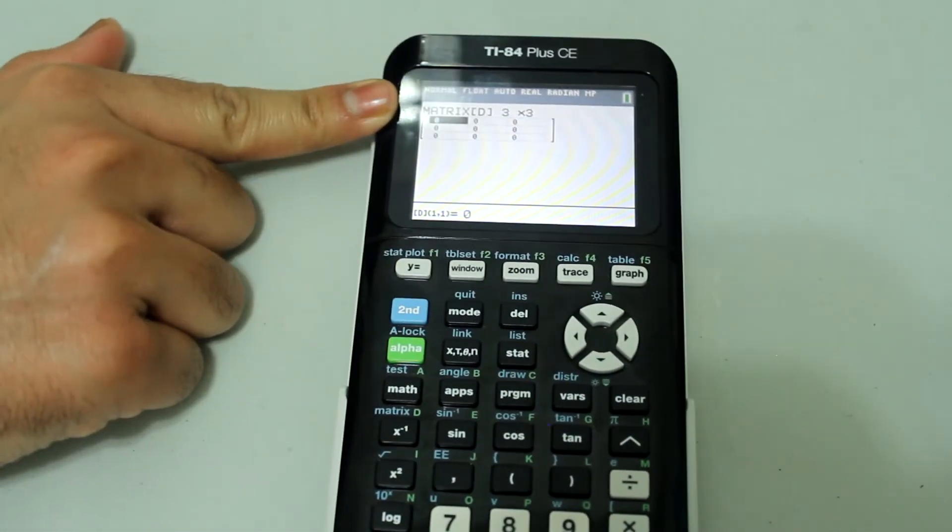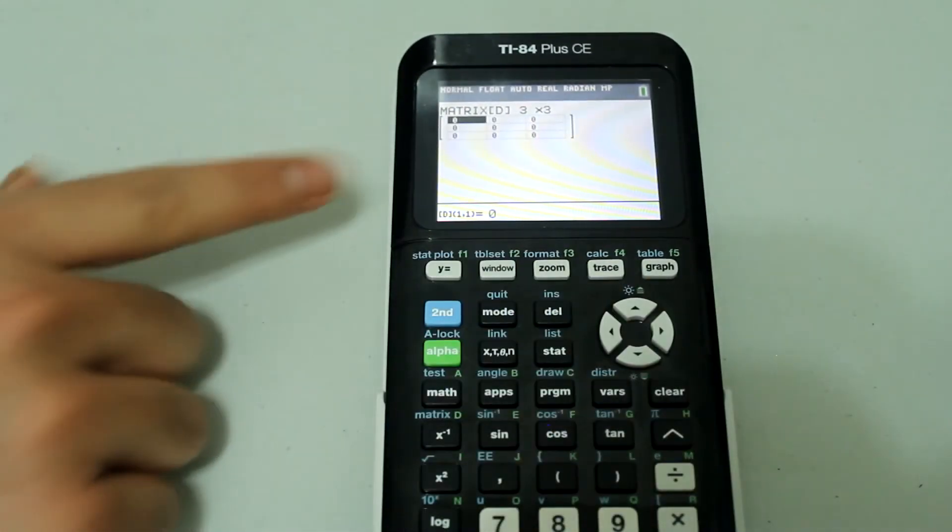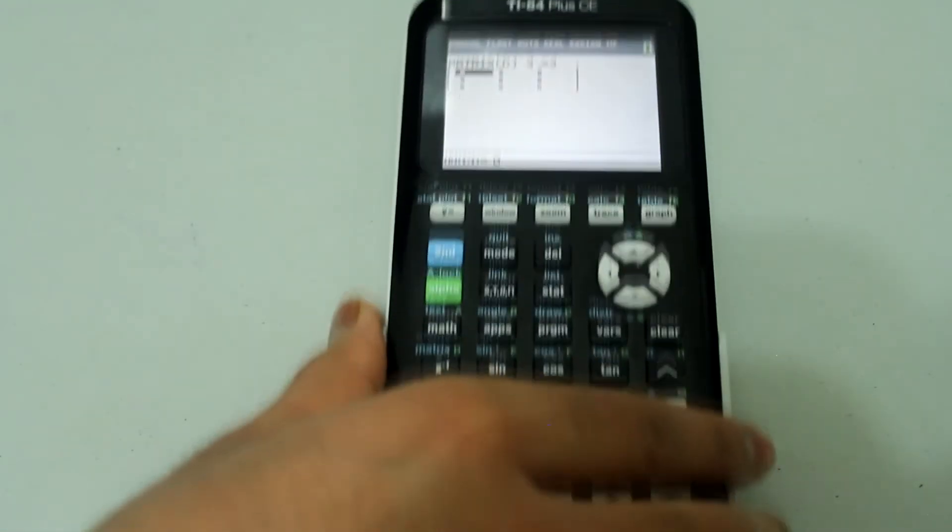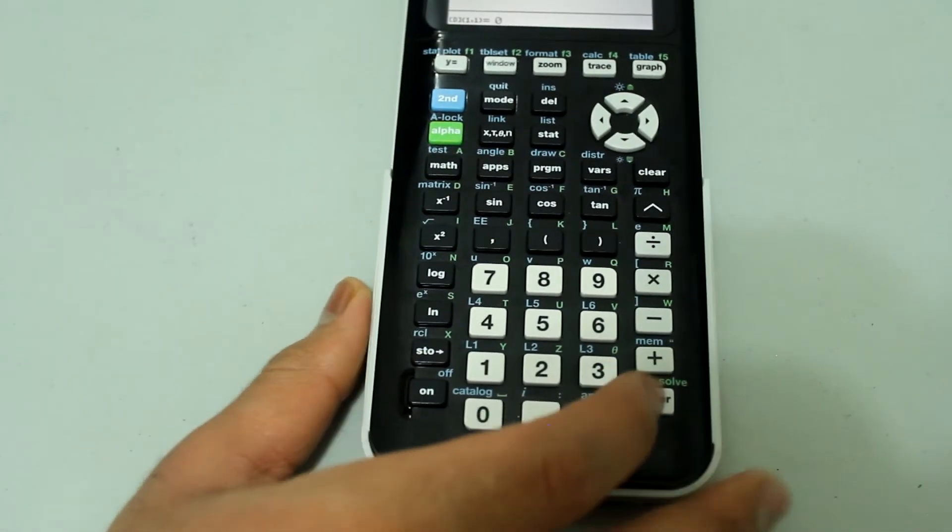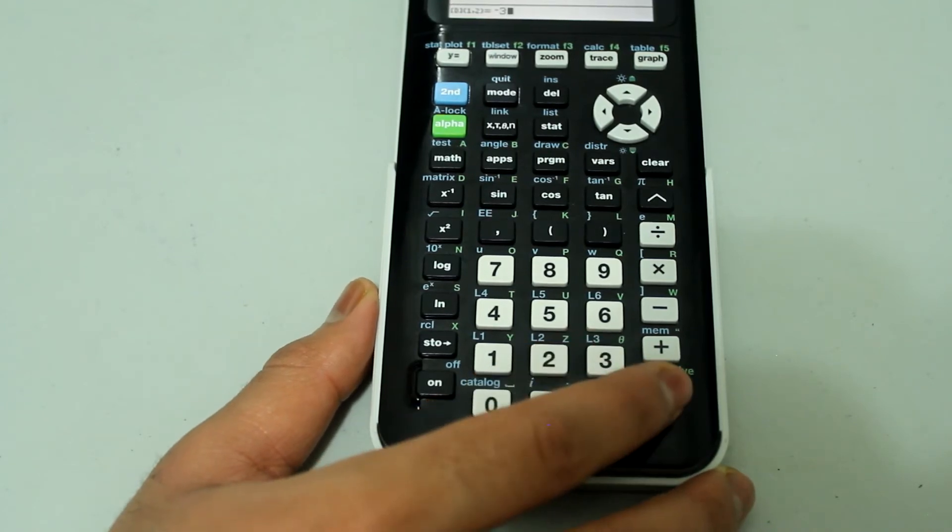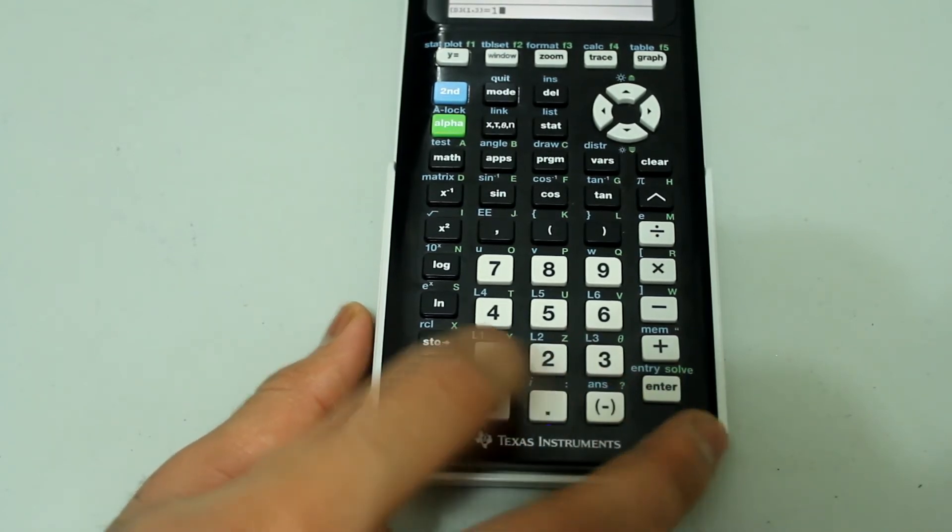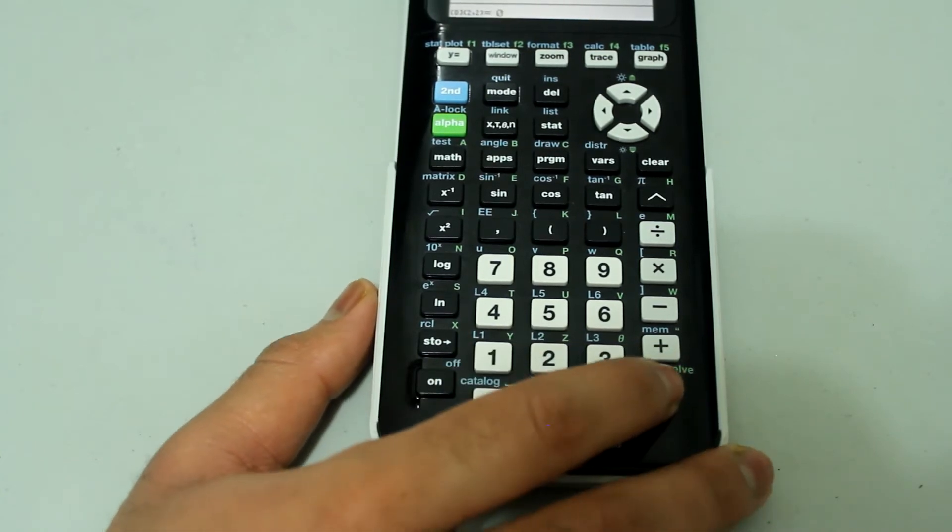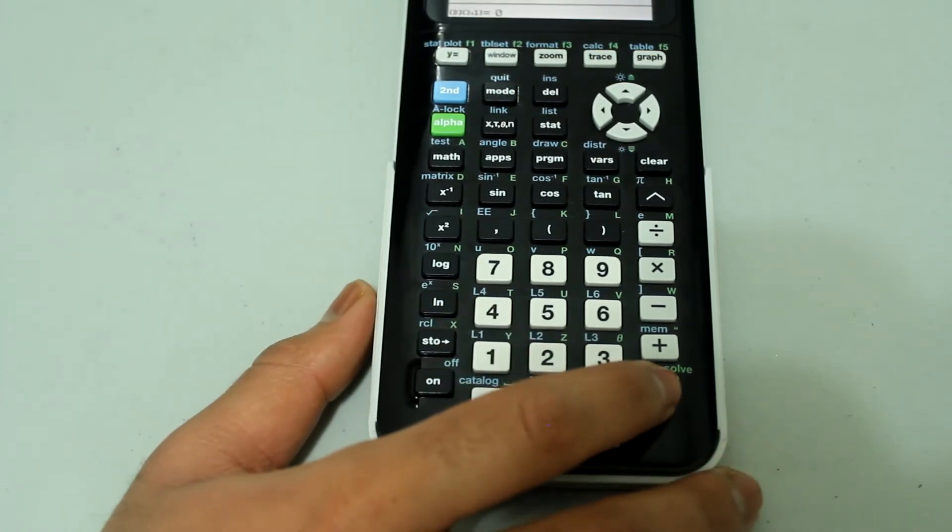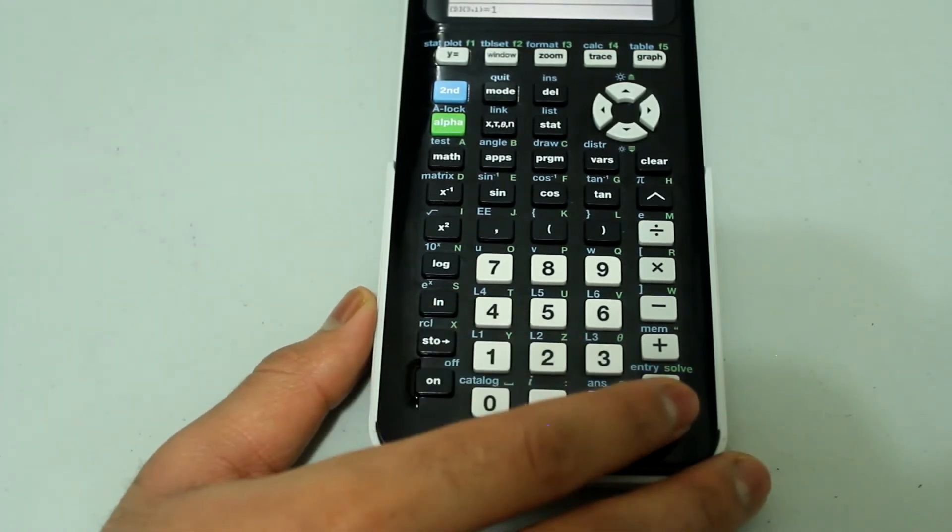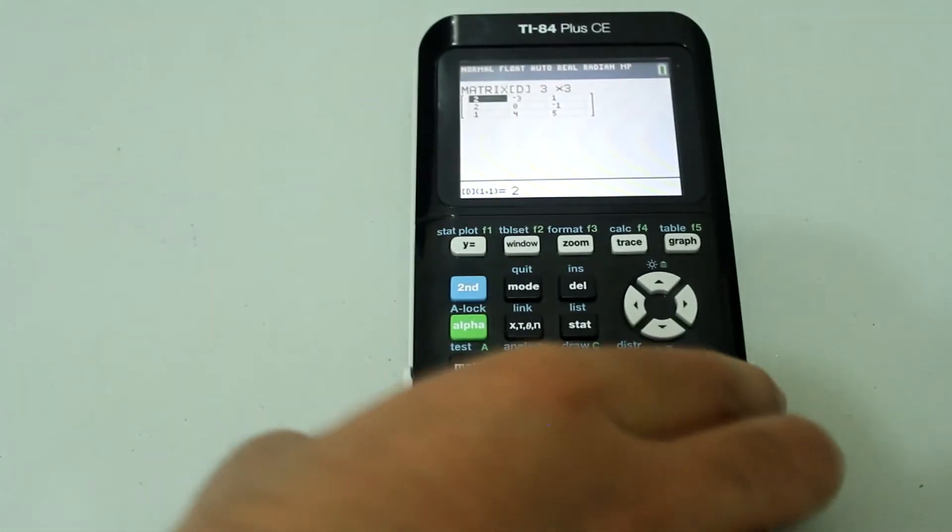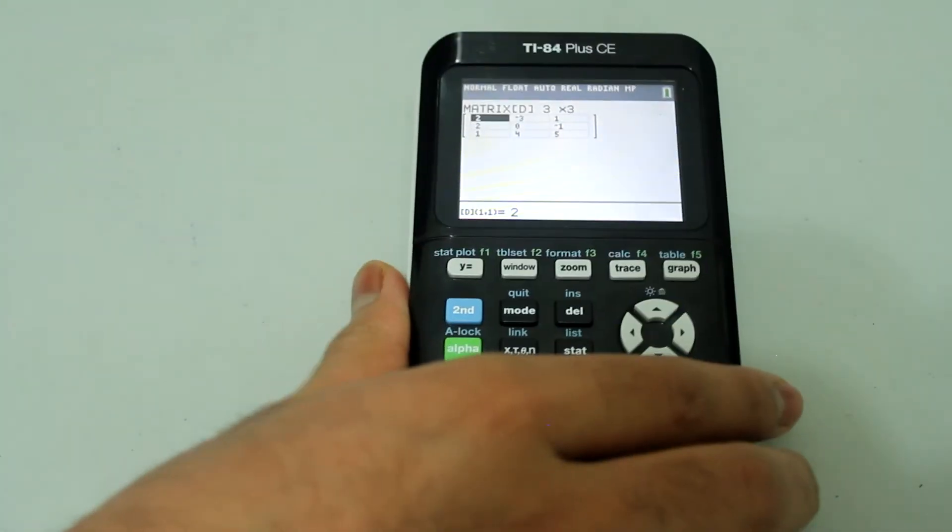Now we have a 3 by 3 matrix and we can just enter values. After each value, you should press enter. So I'm going to do 2, enter, negative 3, enter, 1, enter, 2, enter, 0, enter, negative 1, enter, 1, enter, 4, enter, 5, enter. And remember to press enter after your very last entry.